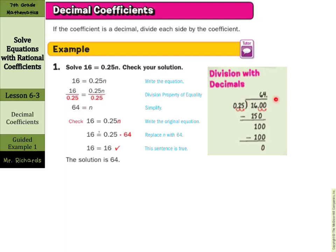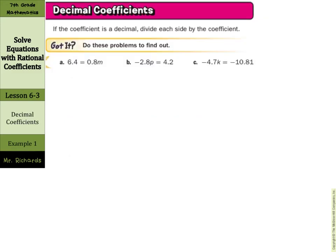Note, if you don't have a calculator, or are not allowed to use one, it is possible to do. You have the .25 or twenty-five-hundredths on the outside. Move the decimal place over twice, so you move the decimal point with the 16 over twice to get 1,600, and divide to get 64. Checking: put your answer back in for n, multiply twenty-five-hundredths times 64, and that is 16. So the solution is 64.